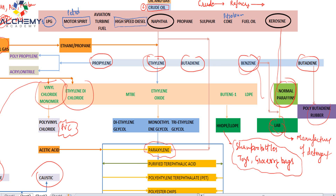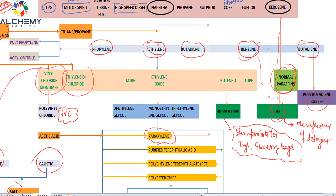So as of now I have told you the major products we produce from petroleum. Coming to one more major point — the textile industry. Approximately 60 percent of the clothing we use is polyester, and that polyester is derived from the petroleum industry. From naphtha we can make paraxylene, and from paraxylene we can make PTA — purified terephthalic acid.